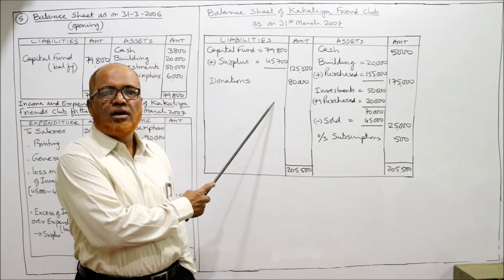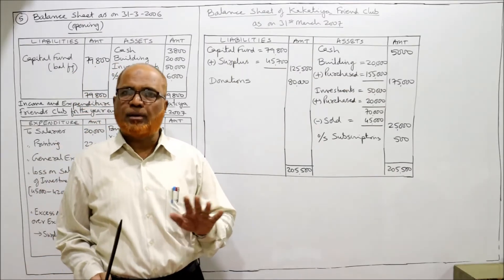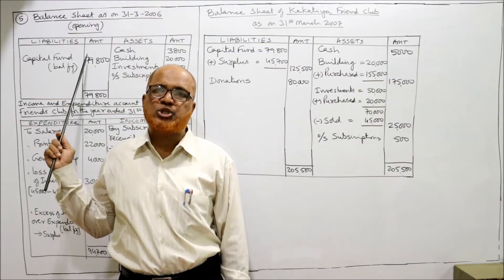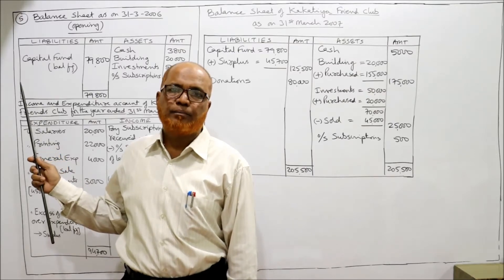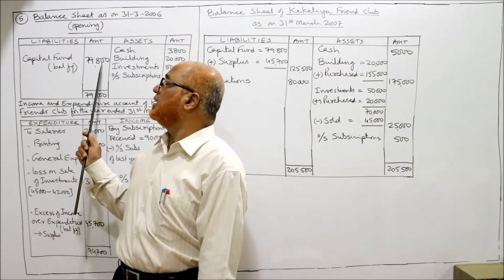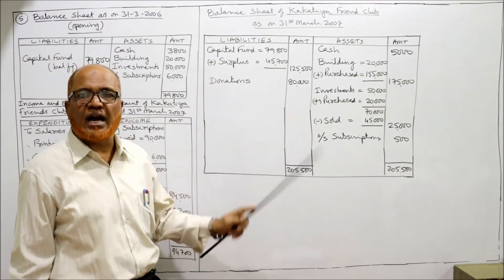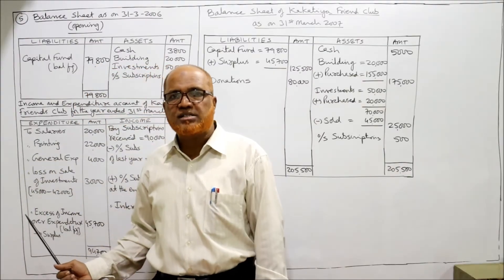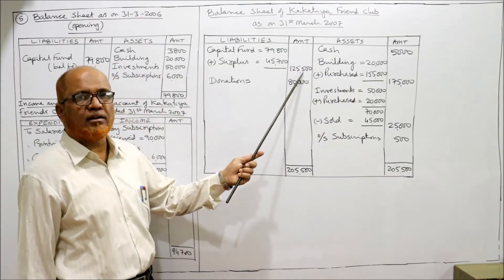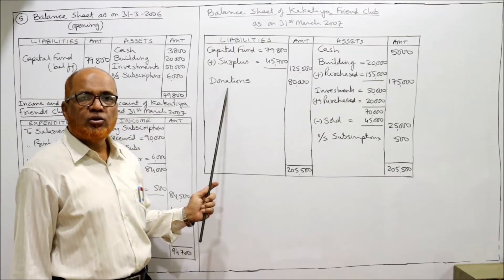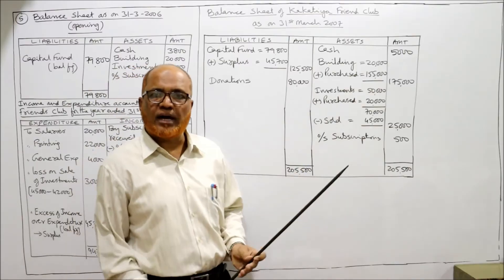On the liability side: capital fund at the beginning of the year was calculated from the opening balance sheet as 79,800. We add the surplus of 45,700 earned during the year, giving a total of 1,25,500. Donations of 80,000 are capitalized and also appear on the liability side.